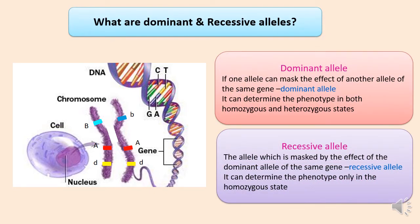So what are dominant and recessive alleles? If one allele can mask the effect of the other allele of the same gene, we call it the dominant allele. Dominant alleles are usually written in capital letters and can determine the phenotype both in the homozygous and heterozygous states. The allele which is masked by the dominant allele is called the recessive allele. Recessive alleles are written in simple letters and can determine the phenotype only in the homozygous state.